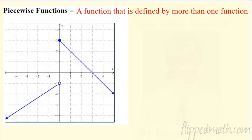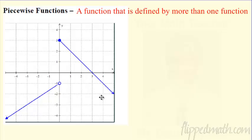What is a piecewise function? Let's get right into it. Here's a piecewise function — I've got an example right here. Here's the definition: it's a function that is defined by one or more functions. This is a function that passes a vertical line test, but it's made up of two different functions — a line over here and a different line over here. Anytime you have two or more functions — it could be three, four, five, a ton — that is a piecewise function.